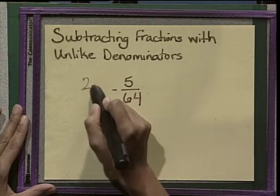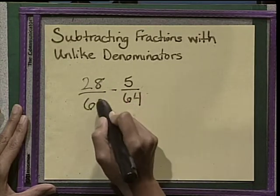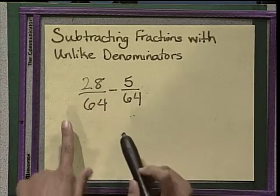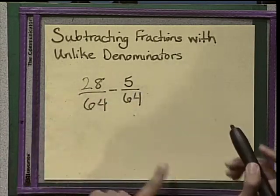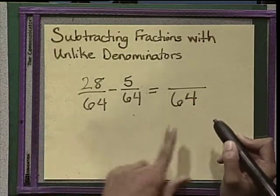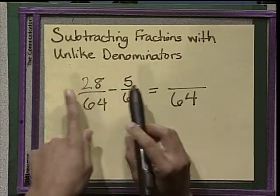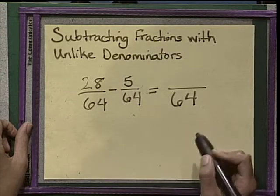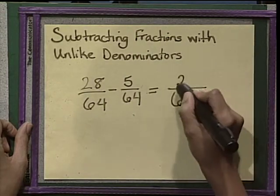Alright, so 28/64 is the new problem. So now we can subtract 28 minus 5. Guess what? 64 stays the same. The denominator always stays the same, and the only thing that you are going to work with is the numerator. So 28 minus 5 gives you 23.